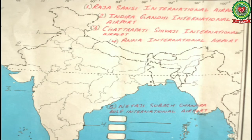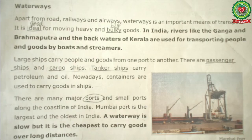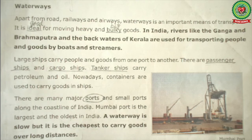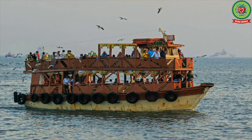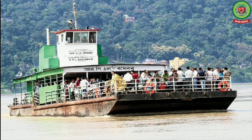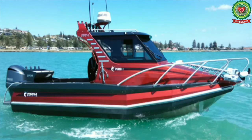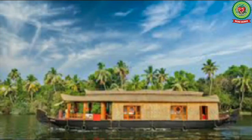Now let's start reading our last means of transport — waterways. Apart from road, railways, and airways, waterways is an important means of transport. It is ideal for moving heavy and bulky goods. In India, rivers like the Ganga and Brahmaputra, and the backwaters of Kerala, are used for transporting people and goods by boats and steamers. Backwaters means a part of a river backed up by a tide or by a dam.